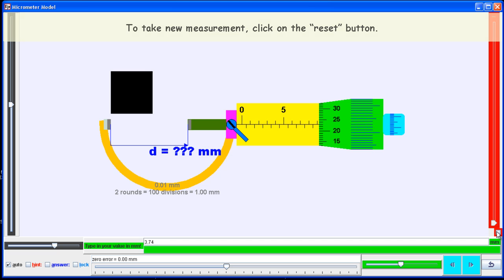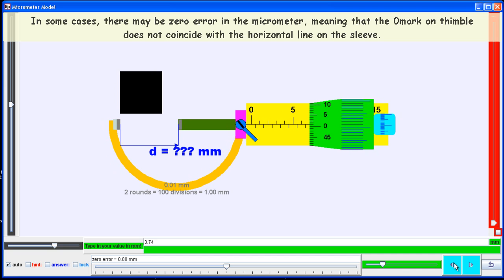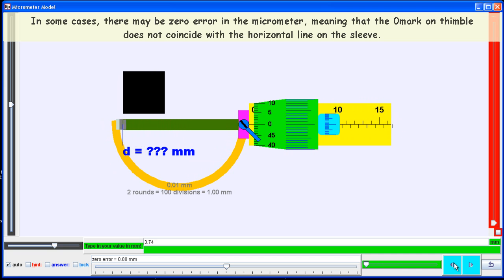Click on the reset button to take a new measurement. In some cases, there could be a zero error in the micrometer due to instrumentation errors or overuse.